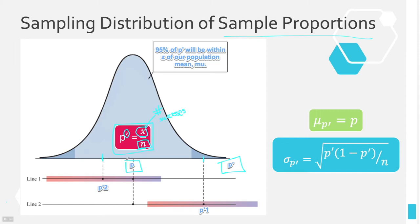The sampling distribution of sample proportions is centered at p. Remember last time the x-bars were centered at mu — here the p-primes will be centered at p. The standard deviation of this distribution is called the standard error, and for proportions it equals the square root of p-prime times (1 minus p-prime) divided by n. All of that is under the square root.